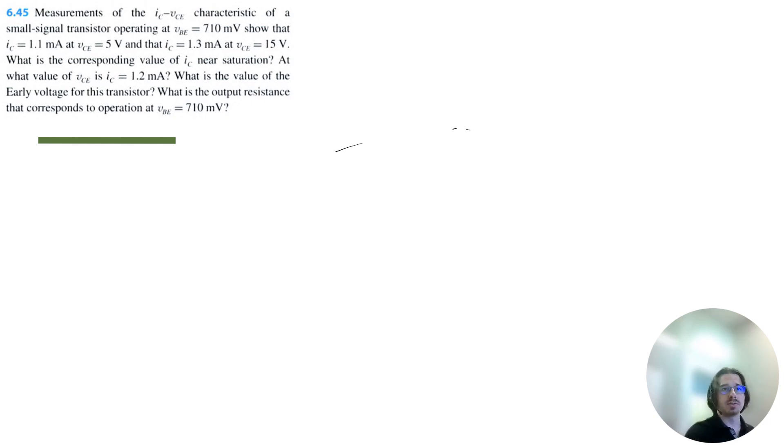Let's solve problem 6.45 from Microelectronic Circuits 8th Edition by Sedra and Smith. Measurements of the IC to VCE characteristic of a small signal transistor operating at VBE equals 710 millivolts show that IC equals 1.1 milliamps and VCE equals 5 volts, then IC equals 1.3 milliamps and VCE equals 15 volts.